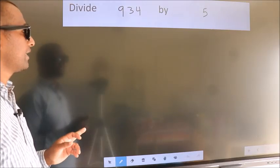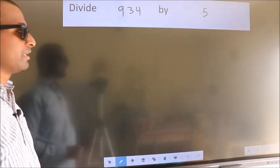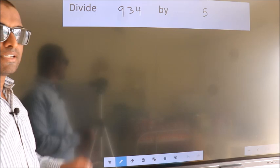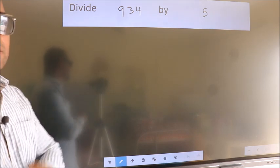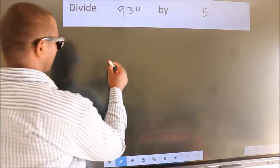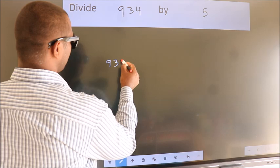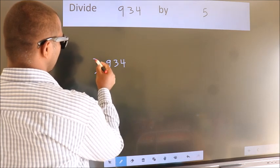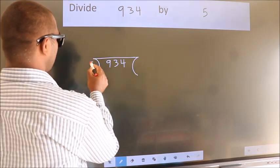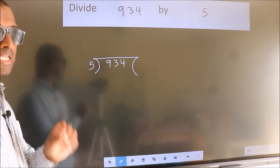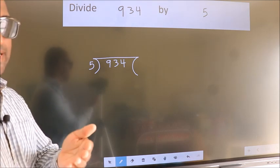Divide 934 by 5. To do this division, we should frame it in this way. 934 here, 5 here. This is your step 1. Next.